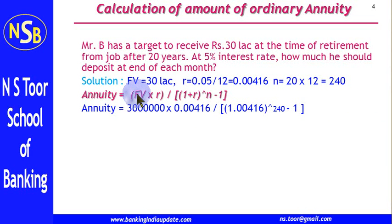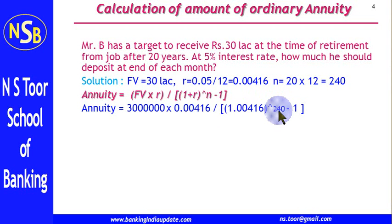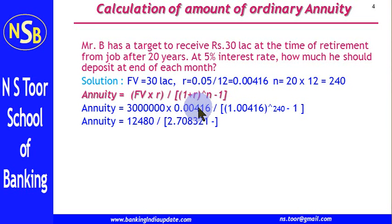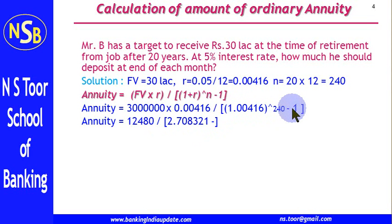The future value is 30 lakh. This is the rate of interest. Then (1 plus rate of interest) raised to power 240, minus 1. Now we have placed the values, and we shall simplify this equation. 30 lakh multiplied by the rate of interest gives us this value, and (1 plus rate of interest) raised to power 240 gives us this value, minus 1.